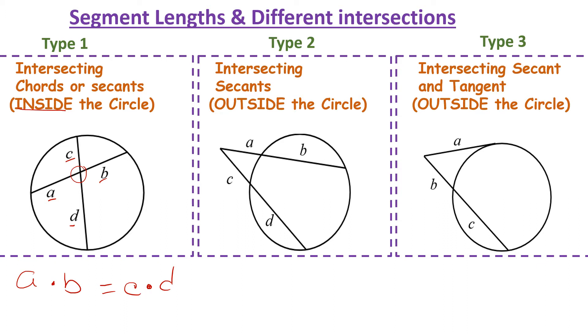Next, we have intersecting secants outside of the circle. The formula we use is A times A plus B equals C times C plus D. Our last one here, intersecting secant and tangent outside of the circle. That formula is A squared equals B times B plus C.